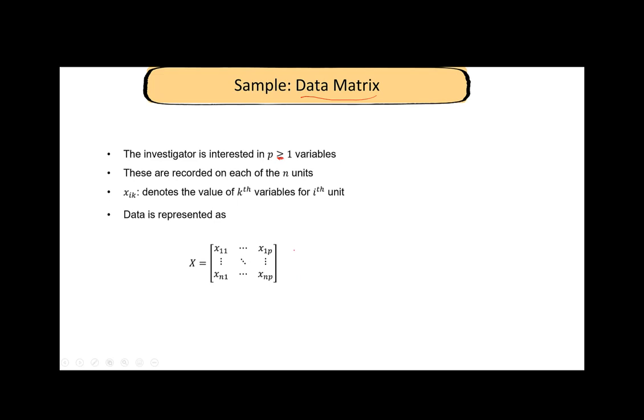X has n rows and p columns. n is the number of units and p is the number of variables. This is the notation we are going to use throughout this course. Any data set we are going to arrange it with all the units in rows and all the variables in columns. x1p is the information for the first individual on the pth variable. xnp is the observation on the nth unit on the pth variable.